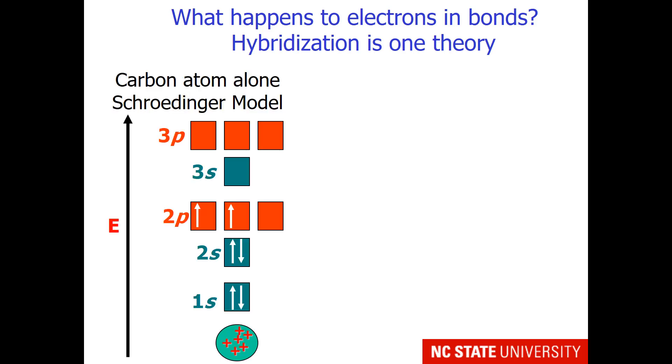In hybridization, the carbon atom alone has electron occupancies that follow the Schrodinger model. So the p orbitals are oriented at 90 degrees to one another.